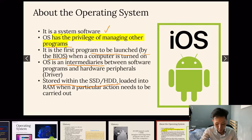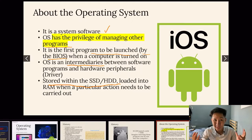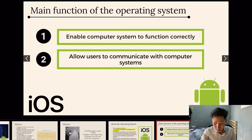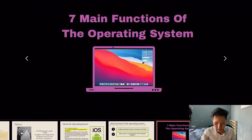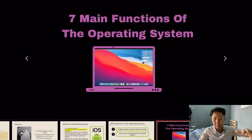The OS is only loaded into the RAM when a particular action needs to be carried out, which means not the entire OS code is loaded into the RAM — only the parts that are needed. The two main functions are that the OS enables computer systems to function correctly and allows users to communicate with the computer system. In this syllabus, we are going to learn the seven main functions of the operating system.